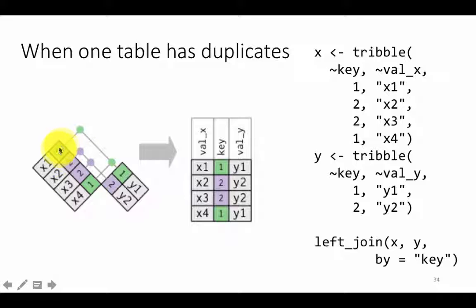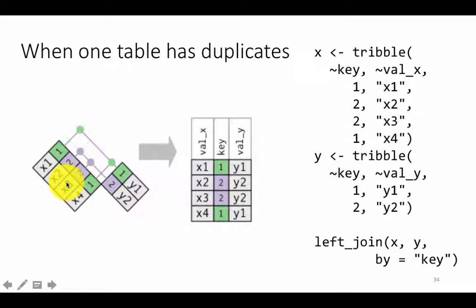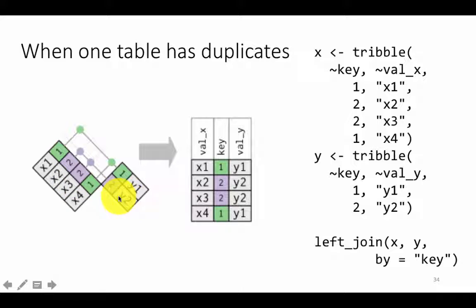One has a match with one here, so X1, Y1 is going to appear in the result. X2 has a match with two here, so X2, Y2 is going to appear. X3 has a key value of two — it again has a match, so this key of two is occurring in two places, and both have a match. So X3, Y2 is going to appear in the output as well.